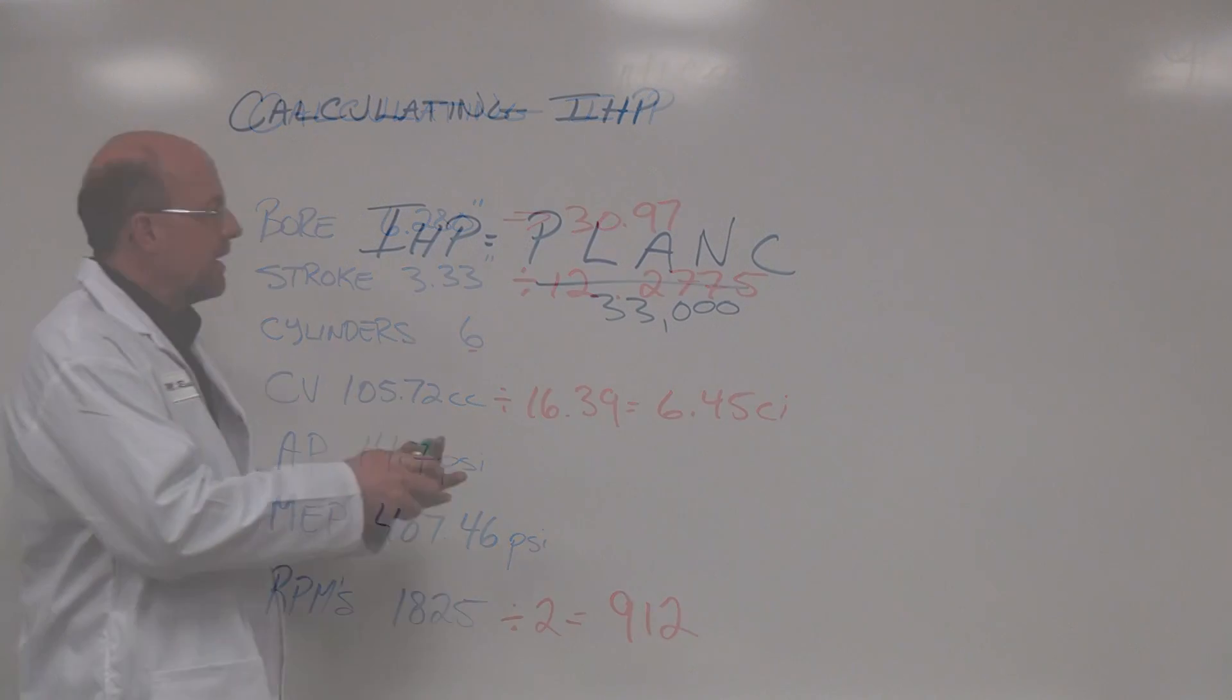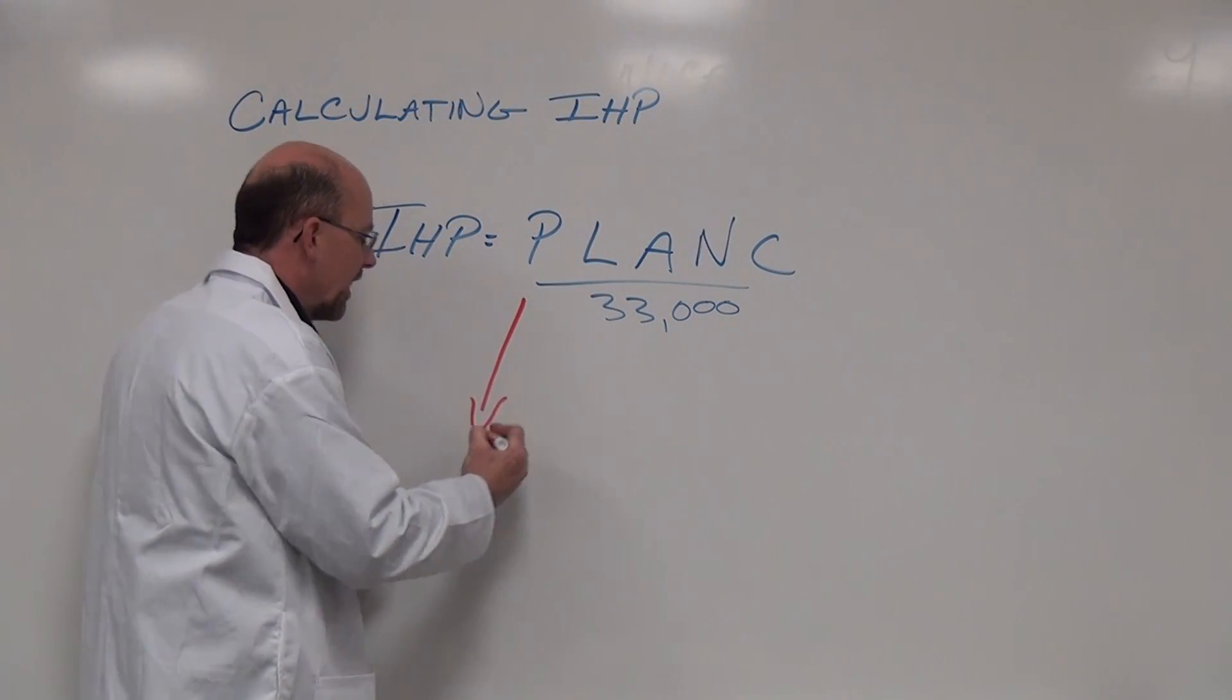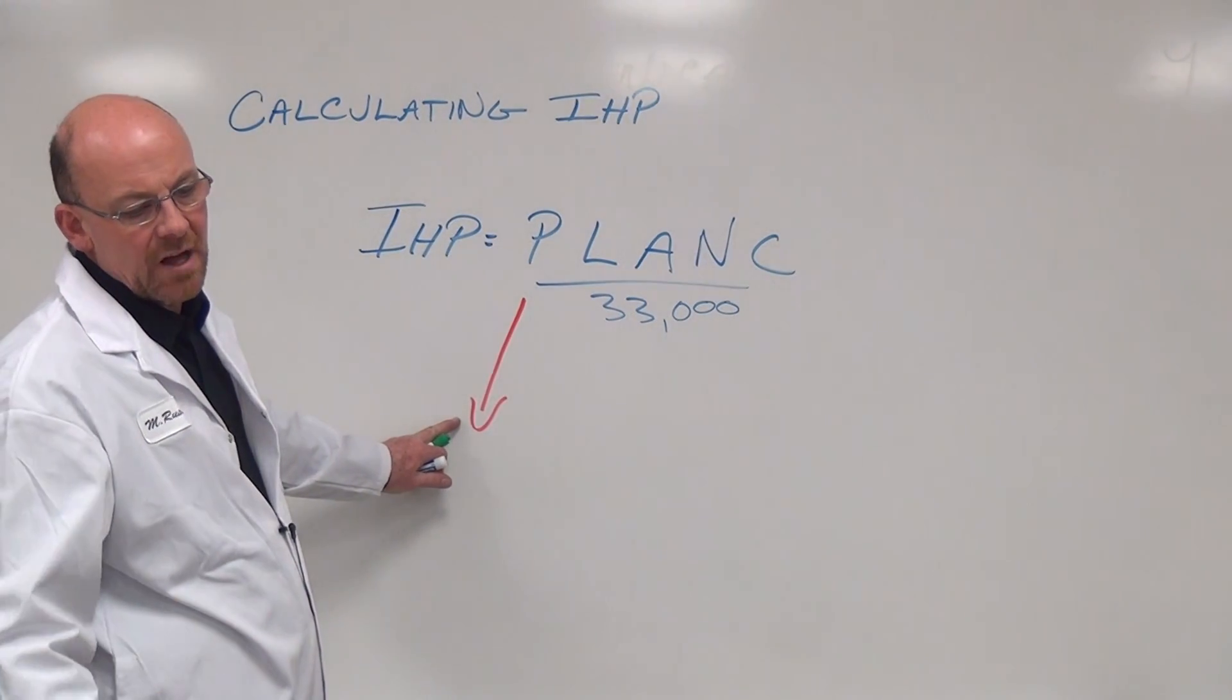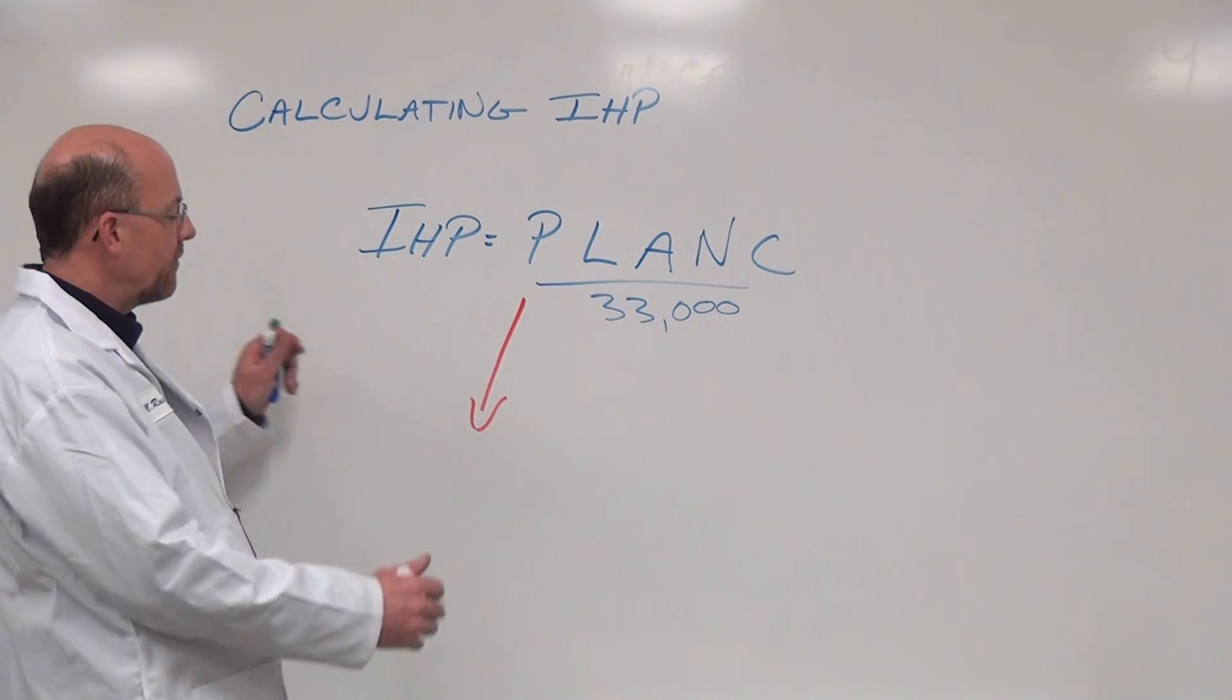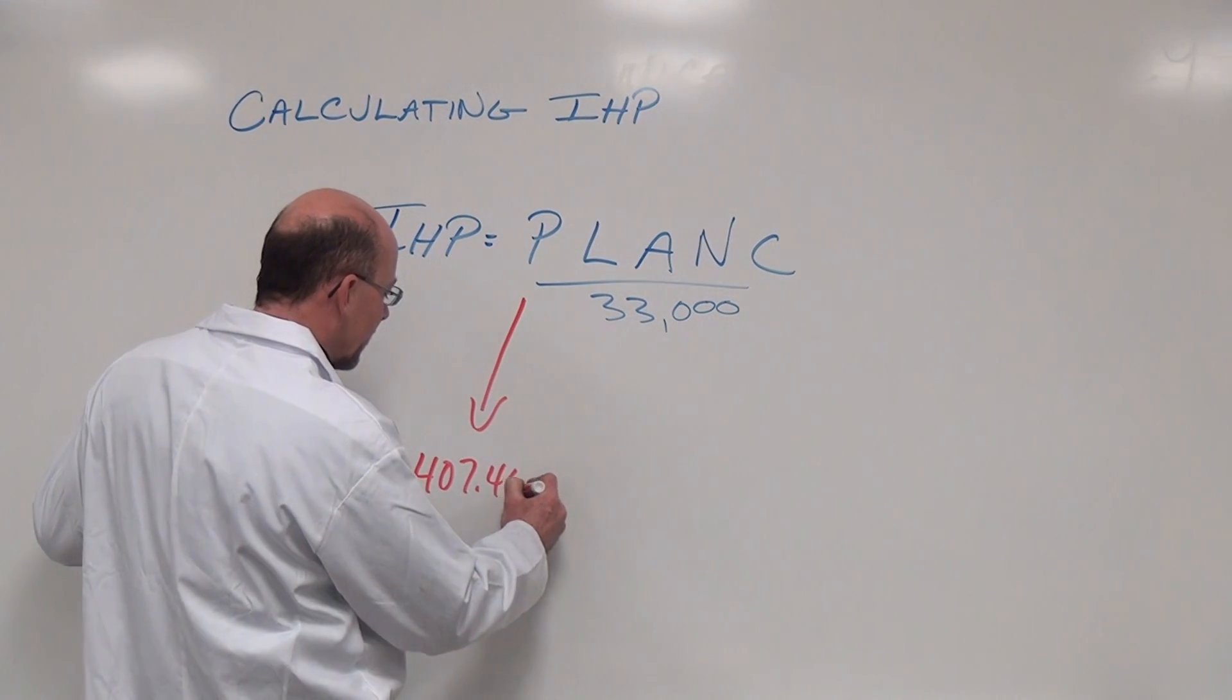Coming back in here, P in this formula stands for mean effective pressure, and we had a given value of mean effective pressure as 407.46 PSI.